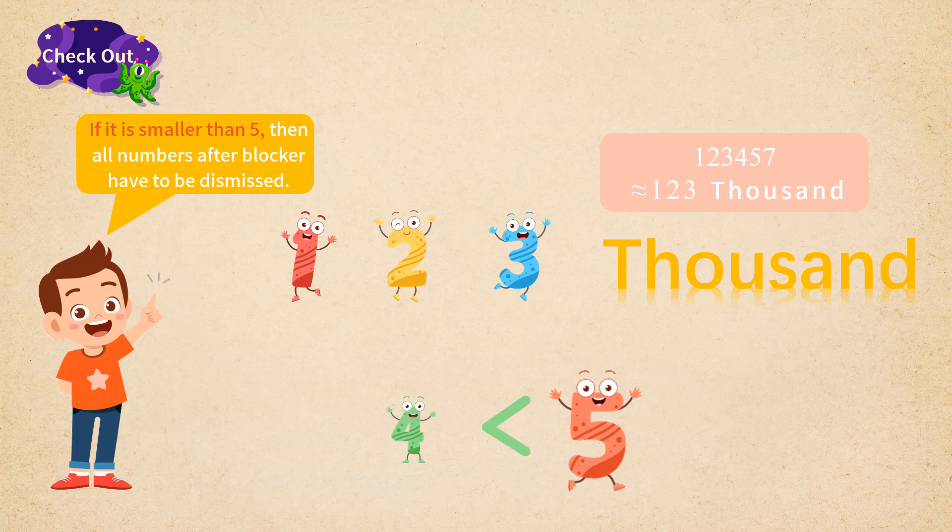that is, the first number to the right of the blocker should be compared to 5. If it is smaller than 5, then all numbers after blocker have to be dismissed.